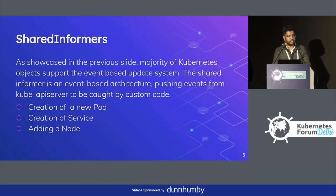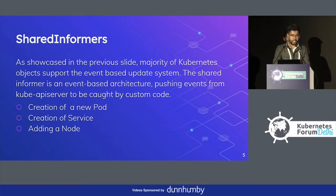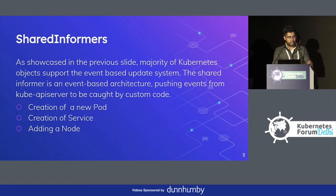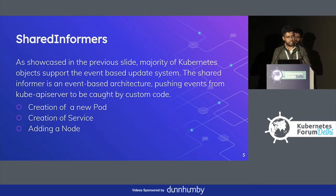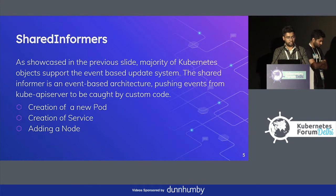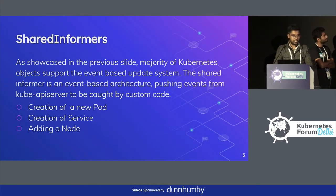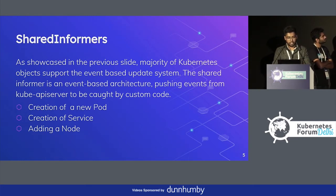There's a concept of shared informers. Since every object supports a watch construct and we can filter events through that, these events are available at the API server. Since the cluster runs at an API server level, it doesn't know what kind of clients are connected to it. If I want to consume these events through a client, I must construct a shared informer. A shared informer is present in the client-go library — it can help my custom code get events from the API server and allow me to write business logic on specific event types like add, create, or delete events.